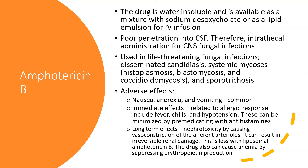Amphotericin B has poor penetration into CSF. Therefore, if there is a serious CNS infection, we'll have to give it intrathecally. Amphotericin B is used only in life-threatening fungal infections, especially disseminated candidiasis, systemic mycoses such as histoplasmosis, blastomycosis, coccidioidomycosis, and even deep sporotrichosis infections, which is a subcutaneous fungal infection.